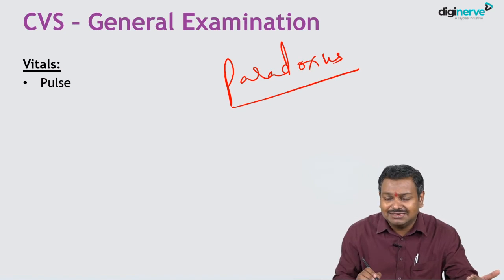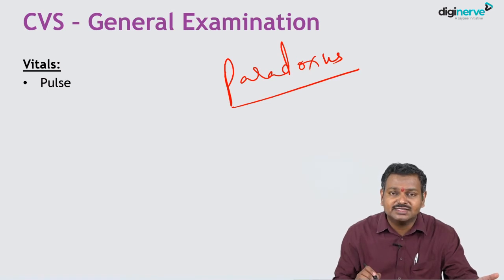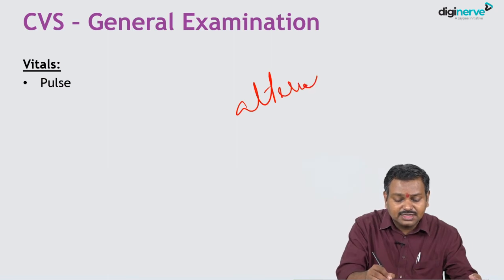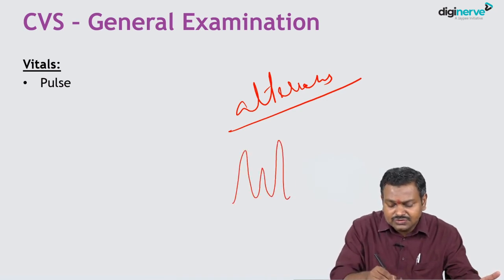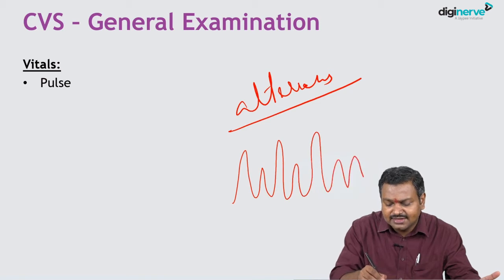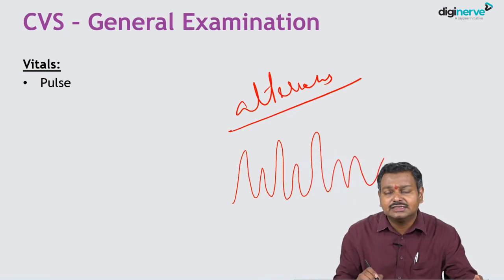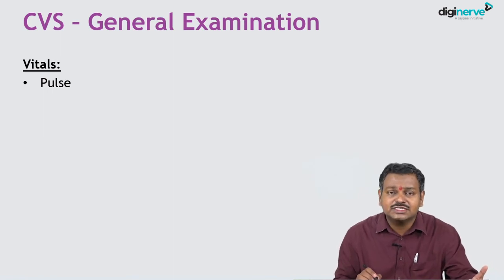Pulsus paradoxus is where inspiratory blood pressure falls more than 10 mmHg — not a true paradox but an exaggerated normal phenomenon. It is characteristically seen in constrictive pericarditis but more often with acute exacerbations of asthma and COPD. Pulsus alternans is the hallmark of LV failure, with alternating high and low volume pulses. It can be measured objectively using a sphygmomanometer to record both pulsus alternans and pulsus paradoxus.